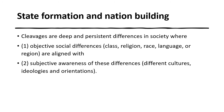Whenever a state is formulated, it is formulated on the basis of class, religion, race, language, or region, and in every state there are different cultures, ideologies, and orientations. On the basis of these, a nation is built as well — every nation has some class system, religious system, race system, and language structure. This is how a state is formulated and ultimately a nation is built.